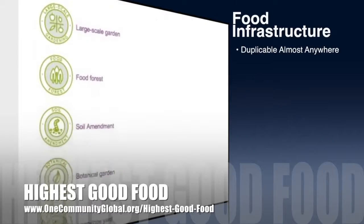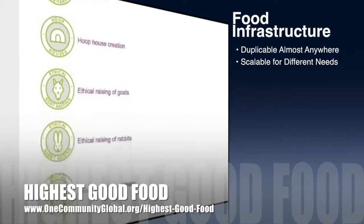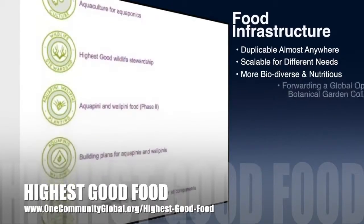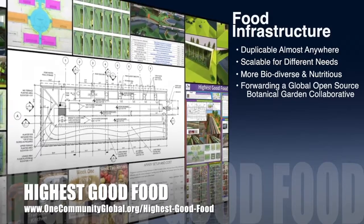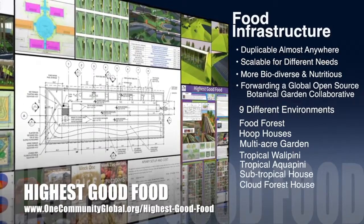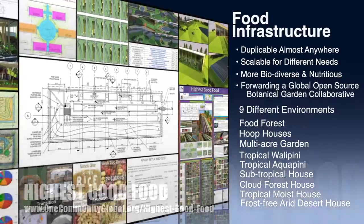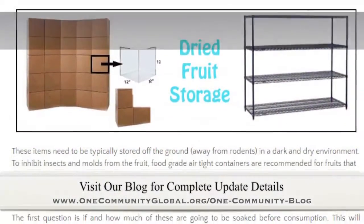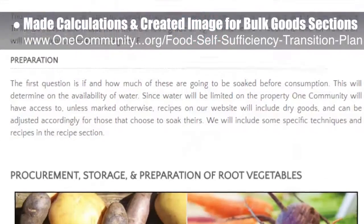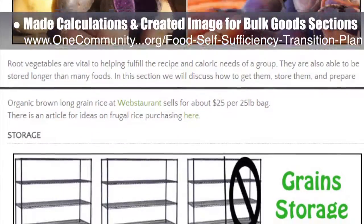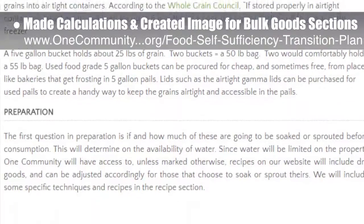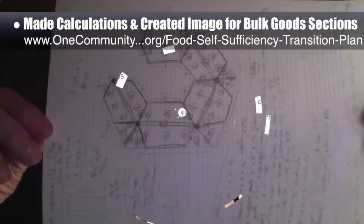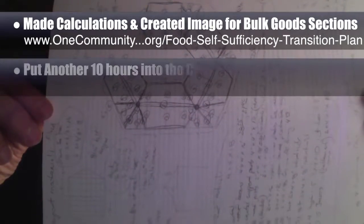One Community's approach to Highest Good Food is duplicable almost anywhere, scalable for different needs, more biodiverse and nutritious, part of forwarding a global open source botanical garden collaborative, and includes 9 different free shared and duplicable growing environments. This week, the core team did the calculations and created an image for the storage details for all the bulk goods on the food self-sufficiency transition plan page, and added the image to the page as you can see here. We also put another 10 hours into the crowdfunding campaign we are developing.